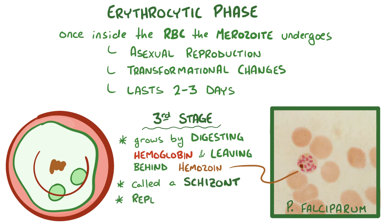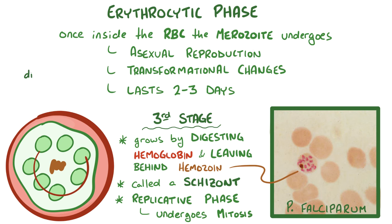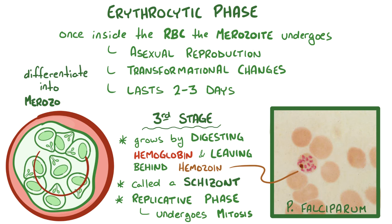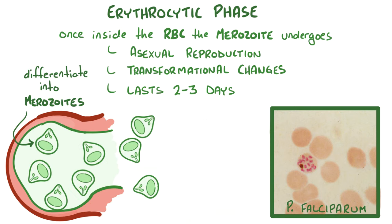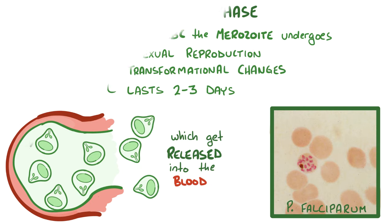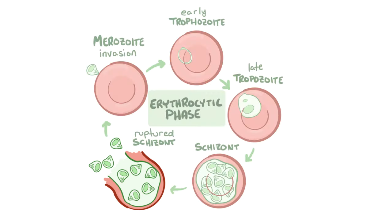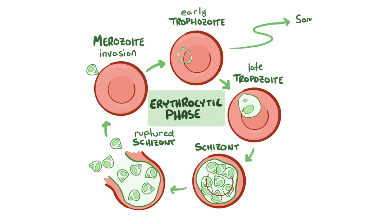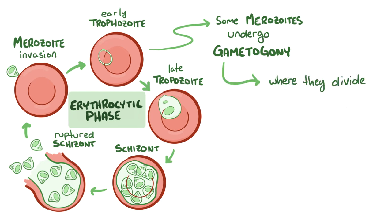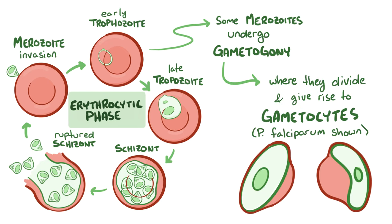This is the actual replicative phase, in which the parasite undergoes mitosis and differentiates into lots of merozoites, which can get released into the blood. Instead of going into the erythrocytic phase again, some of the merozoites undergo gametocytogenesis, where they divide and give rise to gametocytes, which are little sausage-shaped sexual forms that can be either male or female.